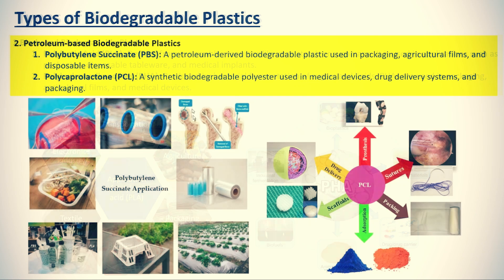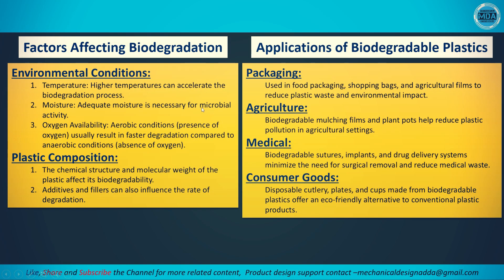The second type is petroleum-based biodegradable plastics. Poly butylene succinate (PBS) is a petroleum-derived biodegradable plastic used in packaging, agricultural films, and disposable items. Poly caprolactone (PCL) is a synthetic biodegradable polyester used in medical devices, drug delivery systems, and packaging.